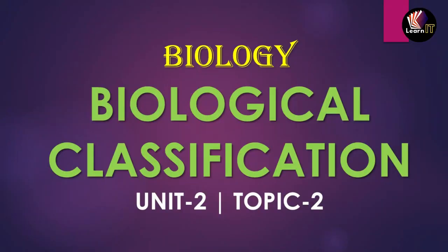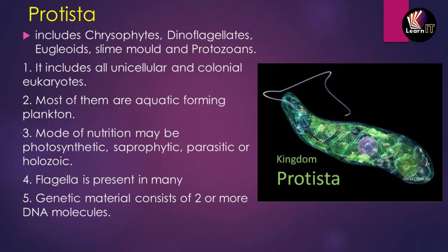Hello and welcome to a brand new video of your channel Learn It. Today we'll be moving on to topic 2 of Biological Classification, which is a unit of Class 11th. In the first topic we discussed the system of classification, how biological classification works, and the importance of classification. We also classified kingdoms into 2, 3, and 5 types. Now we are talking about the 5-kingdom classification given by R.H. Whittaker, and we have already discussed the first one, which is Monera.